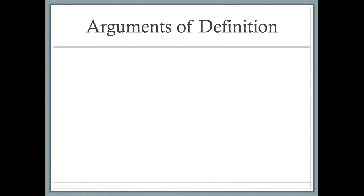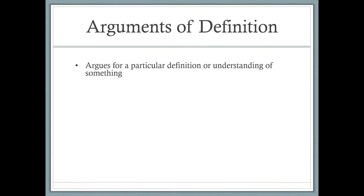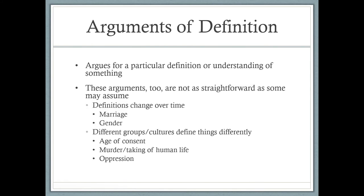Let's move to the second argument we're going to talk about this week — the argument of definition. An argument of definition argues for a particular definition or understanding of something. You're saying this is my definition or my understanding of this particular topic. And these arguments, like arguments of fact, are not as straightforward as some might assume. Definitions change over time — think about the definition of marriage. A hundred years ago, most everyone would have said marriage is between a man and a woman, but look at today.